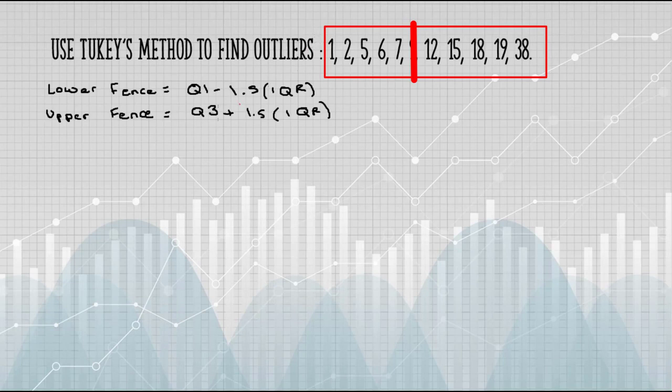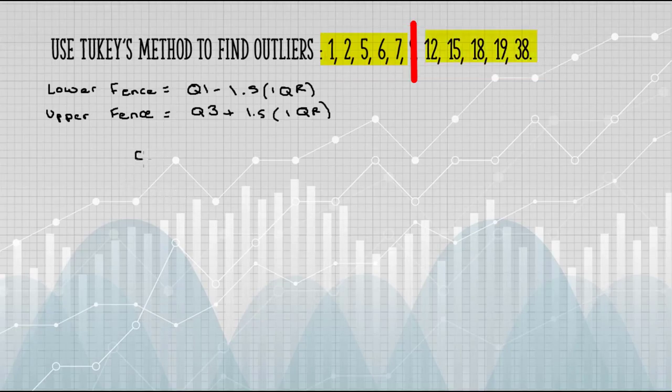We can ignore that number. So our two halves are actually going to be all of the numbers below the median, and all of the numbers above the median. Q1 is the median of the lower half. That's 5.